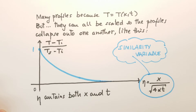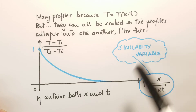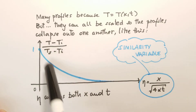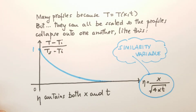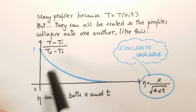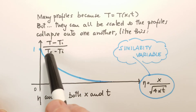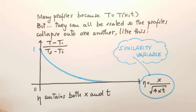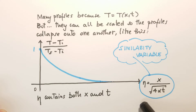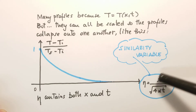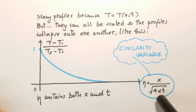We can scale these profiles by changing the temperature scaling and introducing a new variable so that all profiles collapse onto one single profile. We introduce a non-dimensional temperature: (T minus Ti) divided by (Ts minus Ti), so that at the wall this value is always 1. The coordinate is now what's called the similarity variable eta, which contains x and time in the form: x divided by the square root of 4 alpha T, where alpha is the thermal diffusivity.